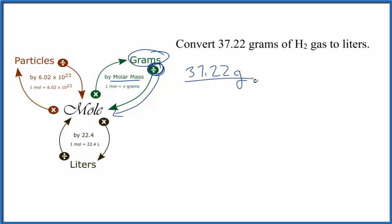The molar mass for hydrogen gas from the periodic table is 2.02 grams per mole. When we do the math, we know we have it set up right because grams cancel out, and we end up with 18.43 moles of H2.